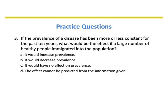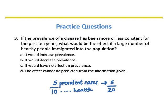Lastly, if a large number of healthy people immigrated into the population — let's look at this mathematically. If we have five prevalent cases in a population of 10 people, that yields 50%. But with those same five prevalent cases and a population of 20 healthy individuals that have migrated in, that yields 25%. So in essence, our prevalence is also decreasing here.